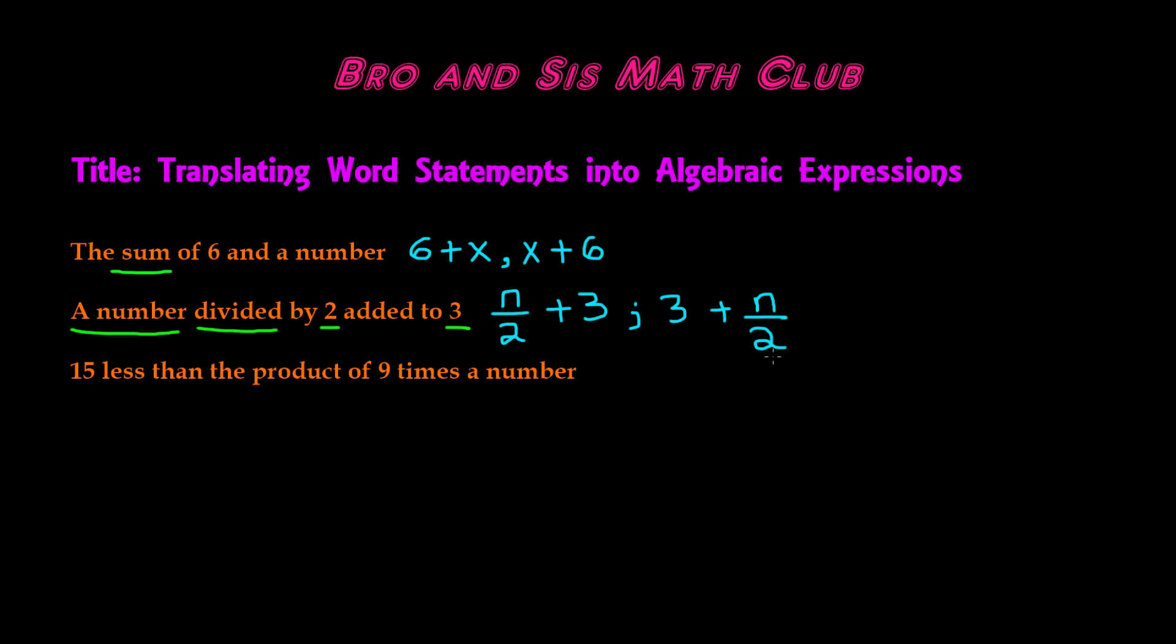Let's write our final algebraic expression, which is 15 less than the product of nine times a number. Since we don't know the value of this number, we can use the variable r.